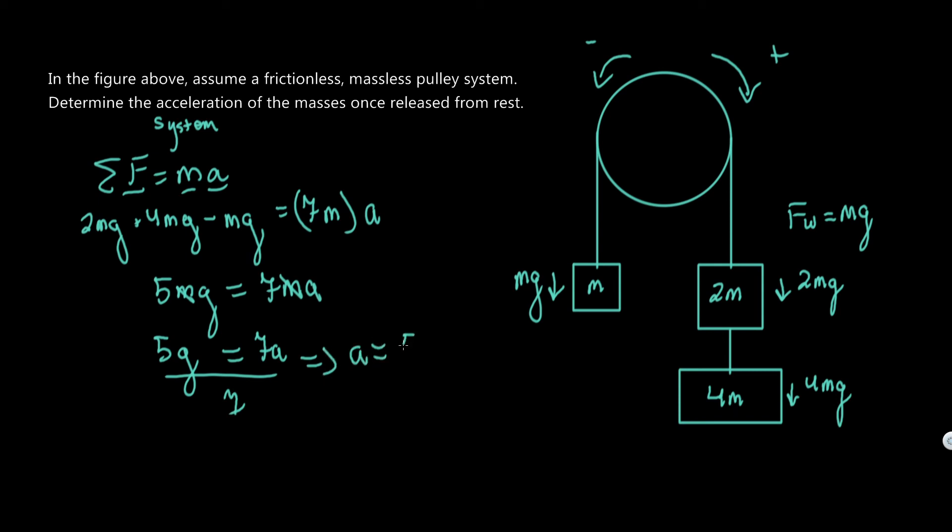a equals 5/7g. You know, you can consider g to be 9.8 or 10 depending on what the problem is asking. We didn't even need to include mass or gravity itself; we just solved for the factor of it. Basically, to recap, just look at the contributing weights and forces, not the tension yet. Using the acceleration, you'll find tension, but that'll be in a different video.